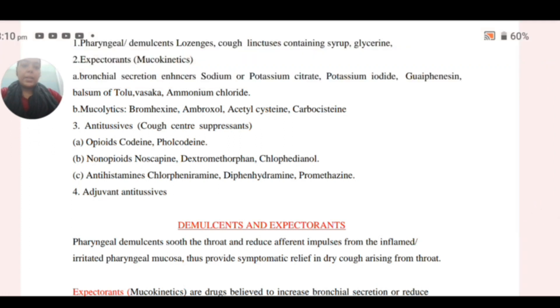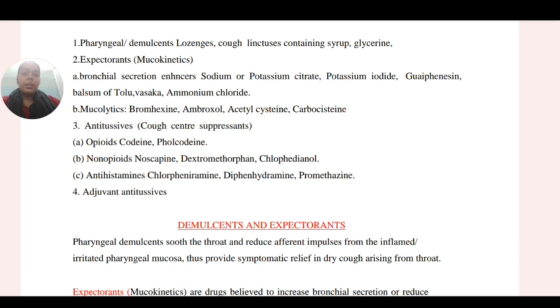The main cough center suppressants include opioids such as codeine and pholcodine, non-opioids such as noscapine and dextromethorphan, and antihistamines such as chlorphenamine and promethazine.